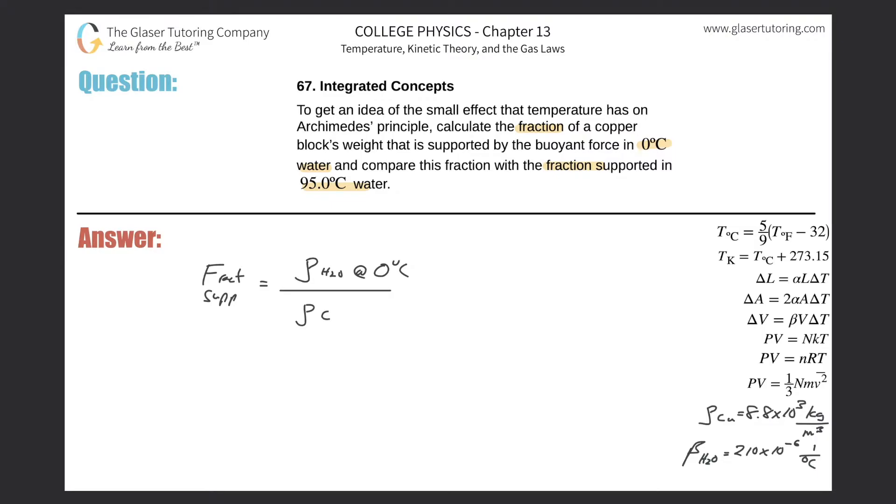We have to look this value up. The density of water at zero degrees Celsius is roughly 1000 kilogram per cubic meter, so all we have to do is plug in the value 1000 and then divide it by the density of copper, which if we look that up is about 8.8 times 10 to the third kilogram per cubic meter.